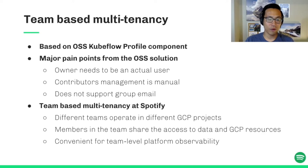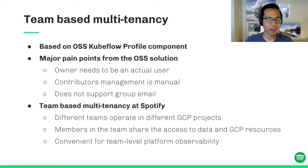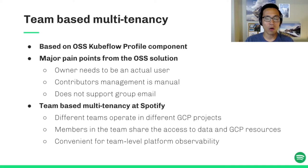First, the Kubeflow profile's owner has to be a real user, but not a team represented by a group email. This is not ideal because people are moving among teams — if the owner leaves the team, the namespace needs to be reconstructed. Second, the contributor of a namespace has to be managed manually with no standard process. Third, if we build a new cluster, the owner of a namespace would have to configure all contributors again. Additionally, it doesn't support Google Groups, and all contributors need to be added individually, which is tedious especially if you have a big team.